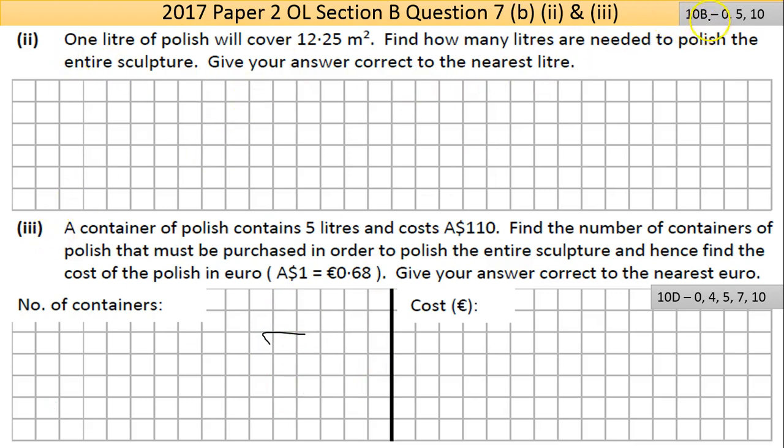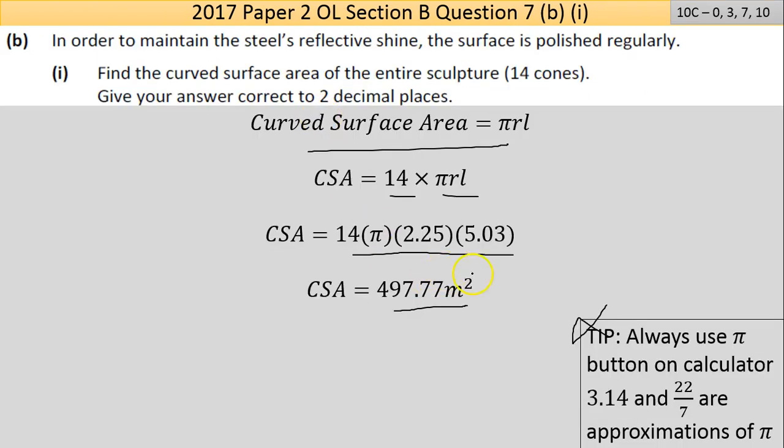This is Question 7b parts 2 and 3. Part 2: one liter of polish will cover 12.25 m². Find how many liters are needed to polish the entire sculpture. If we know the area of all the cones, we can find how many liters of polish are used by dividing 12.25 into that number.